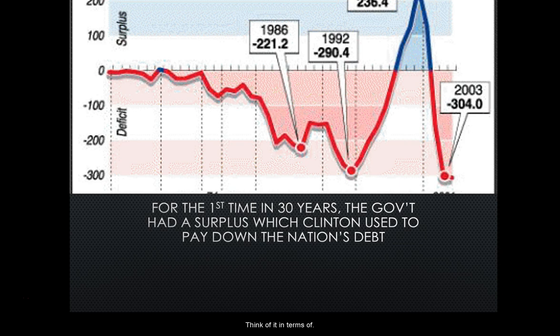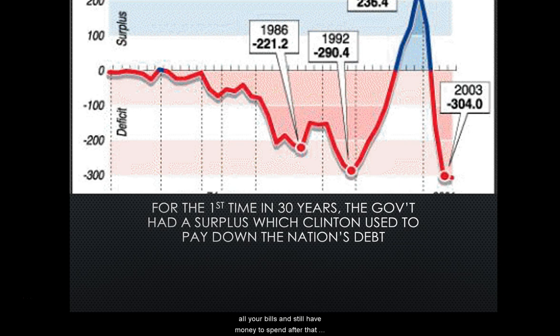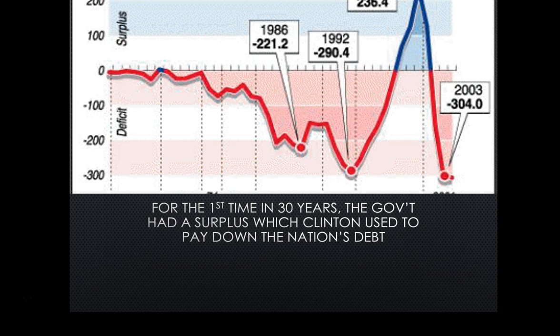Think of it in terms of a regular American having disposable income — you're making enough money to pay all your bills and still have money to spend after that. That is a surplus. In the nineties, we are out of debt; we're in the black for the first time in 30 years.